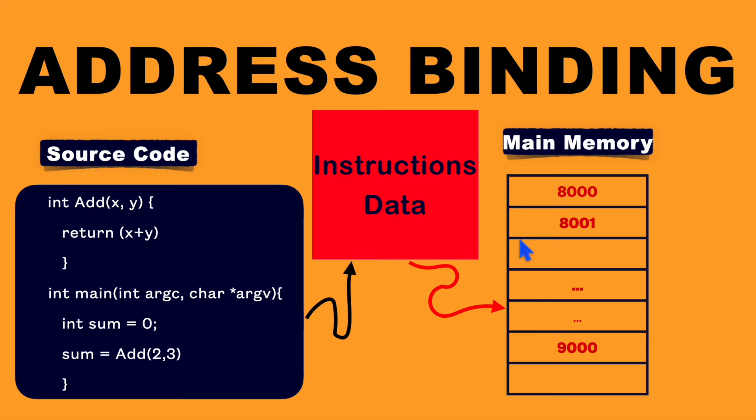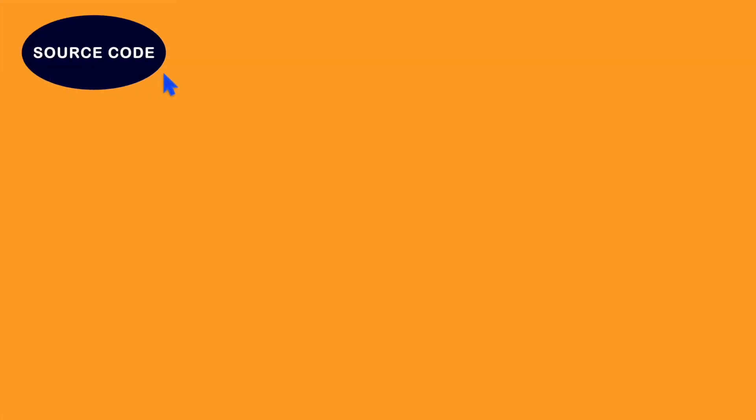Let's understand this with an example. We have this source code, so this source code first needs to be converted into corresponding object files. Let's say we have five source files.